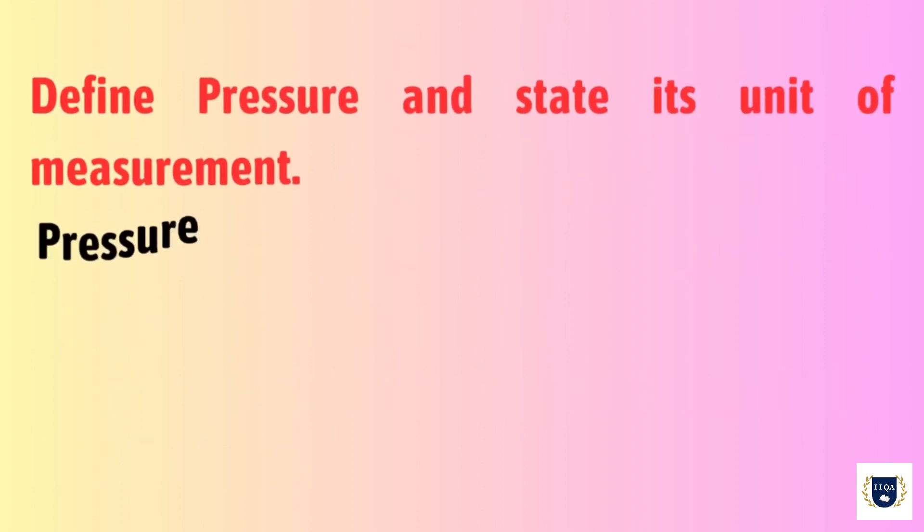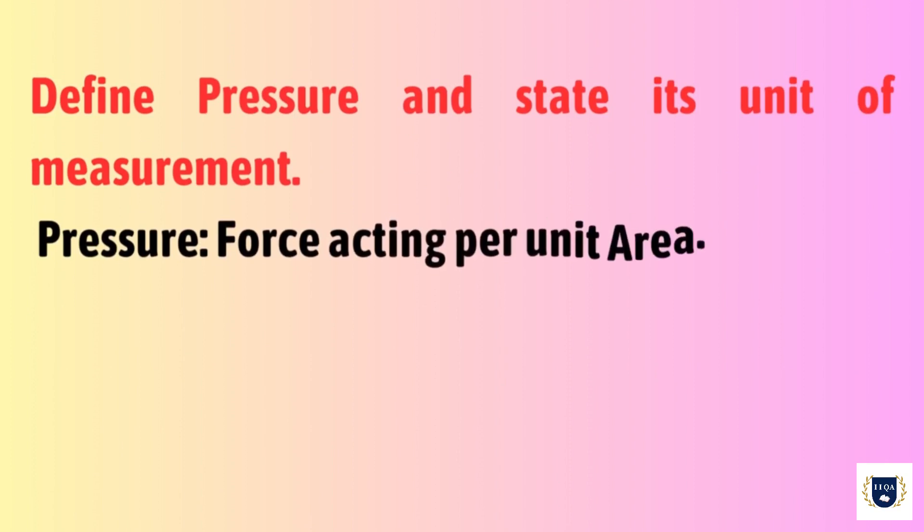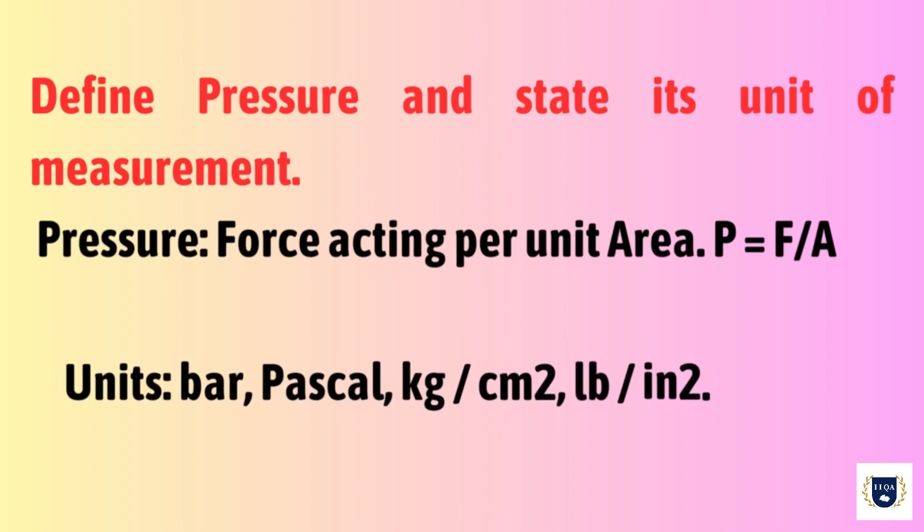Define Pressure and State its Unit of Measurement. Pressure: force acting per unit area. P equals F by A. Units: Bar, Pascal, Kilogram per centimeter square, Pounds per square inch.